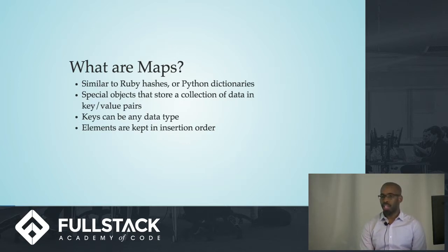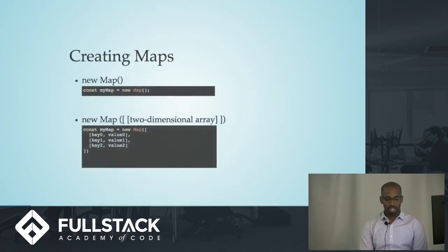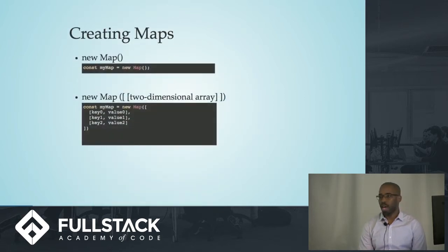For maps, any data type can be a key. So I can use strings, symbols, data types like undefined, not a number, and null. To create a map, I use the new operator, the word map, and I invoke it with a set of parentheses. I can actually insert a two-dimensional array into that and it will become the key-value pairs for that map.